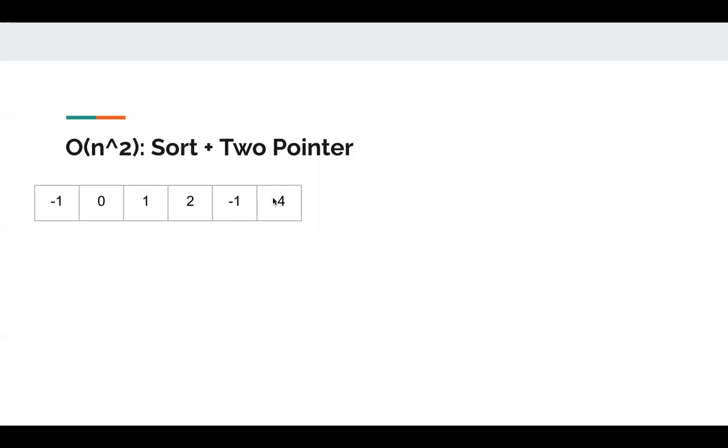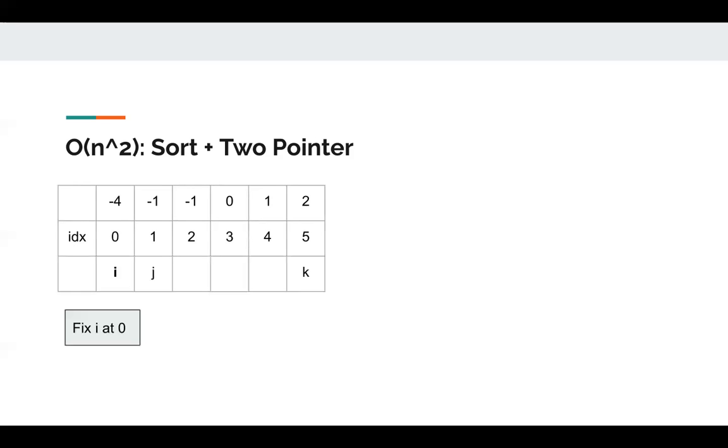Then we can give some index to make it much more clear. Next we can use two pointer. First, we fix i at zero. Then we place j right after i and place k at the end.